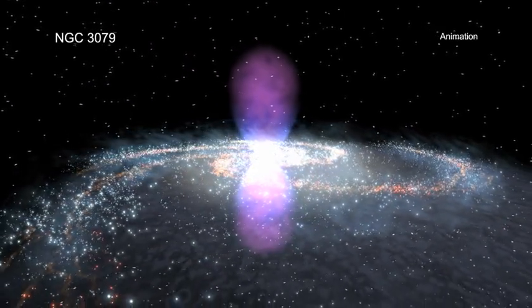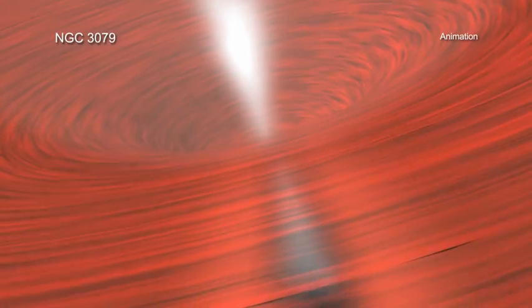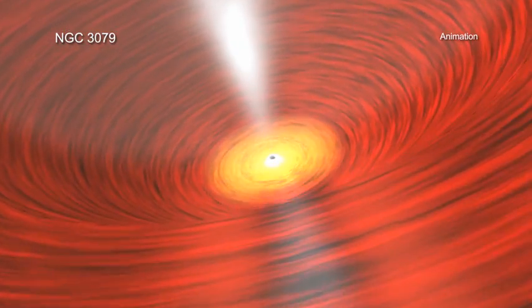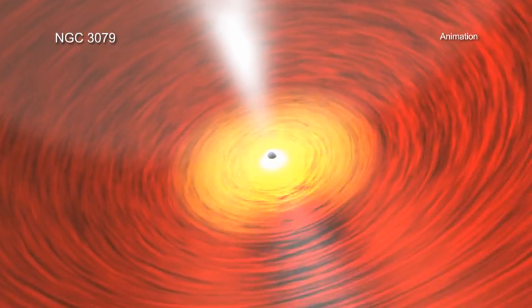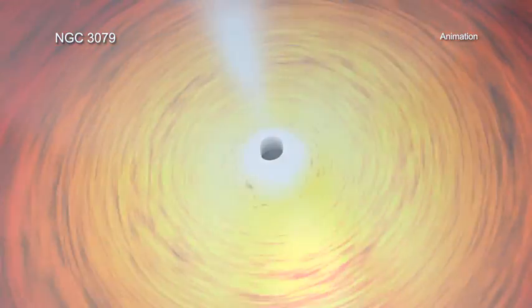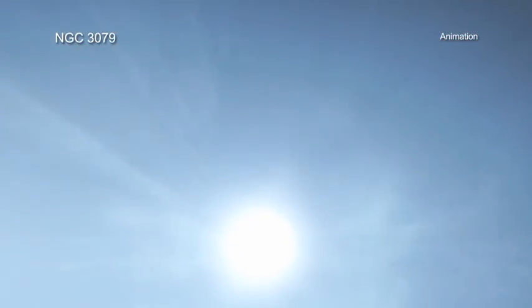Astronomers think such super bubbles may form when processes associated with the infall of matter into a supermassive black hole in the center of the galaxy leads to the release of enormous amounts of energy, in the form of particles and magnetic fields. Super bubbles may also be sculpted by winds flowing from a large number of young, massive stars.